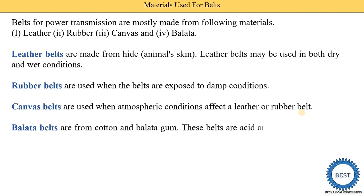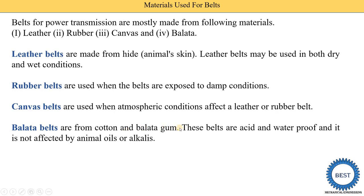The last material is the balta belt. Balta belts are made from cotton materials and balta gums. These belts are acid and waterproof, meaning acid and water do not affect the belt material. They are also not affected by animals, oils, and alkalis. Where conditions involve more water and more acid around the belt drive, we use the balta belt.